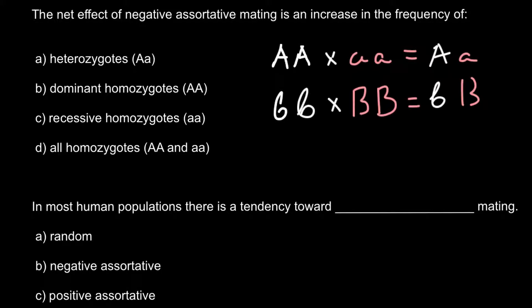So we call positive assortative mating when someone chooses a mate from his own group, from his own area, from his own country, from his own ethnicity.